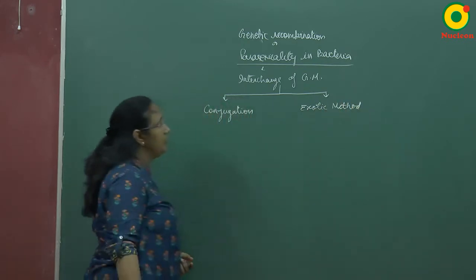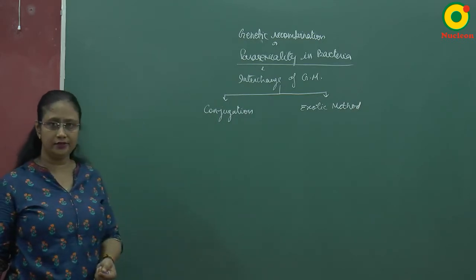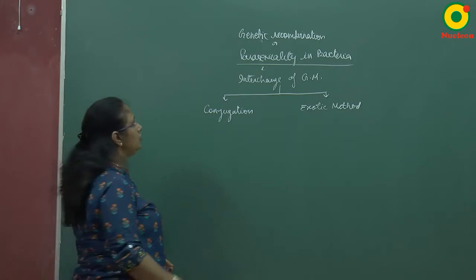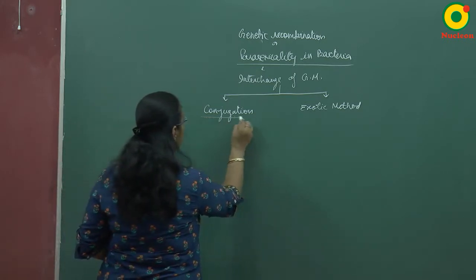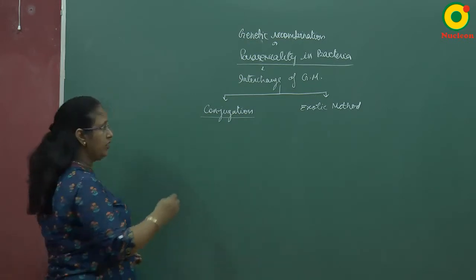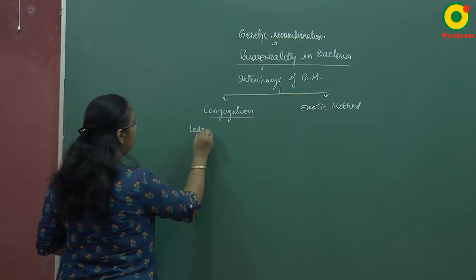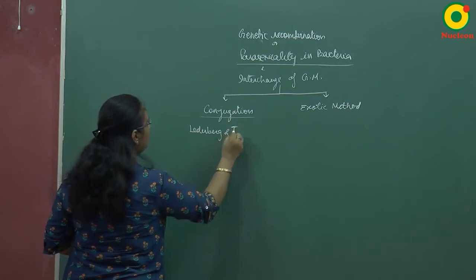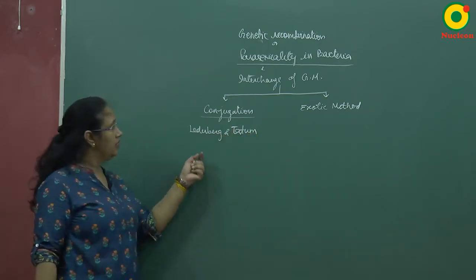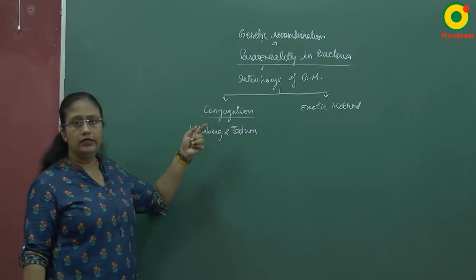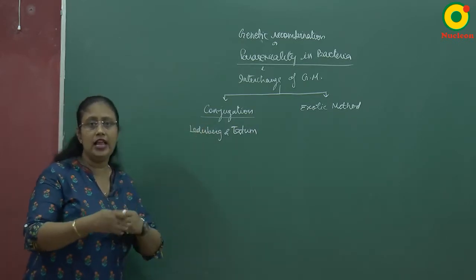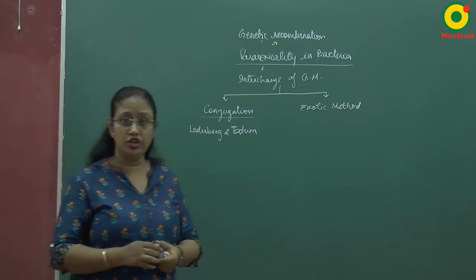Parasexuality was studied by the scientists Lederberg and Tatum in 1947. They discovered conjugation and found that the exchange of genetic material takes place with the help of a conjugation tube.